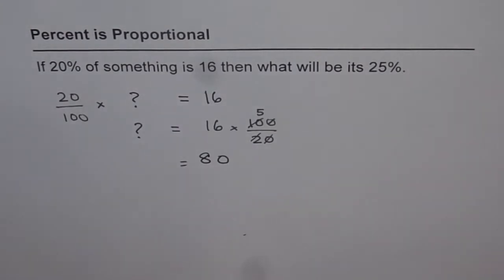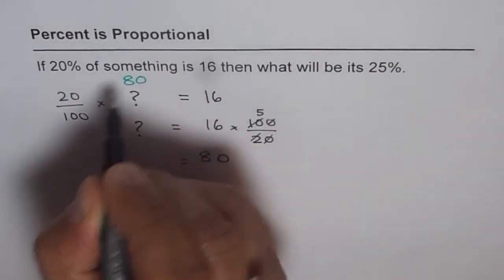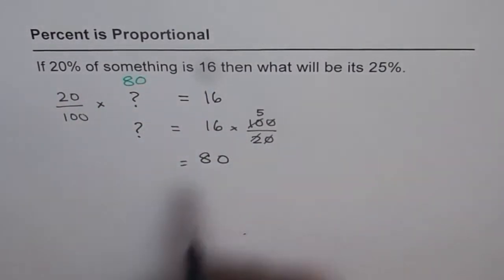So, what we know now is at least 20% of what is 16, and that is, that something is 80. So, 20% of 80 is 16.